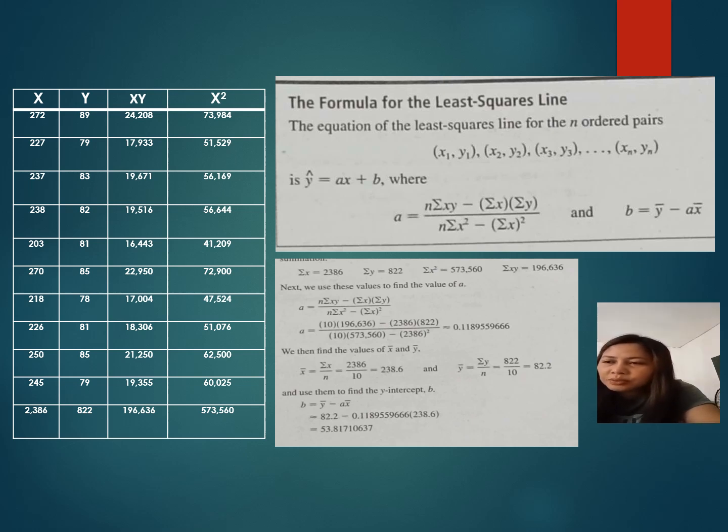Next, we are going to add each column of numbers. The sum of x values is 2,386, and y values is 822. The sum of xy is 196,636, and the sum of x squared is 573,560.